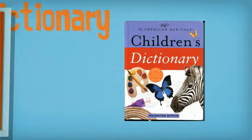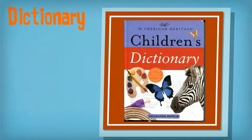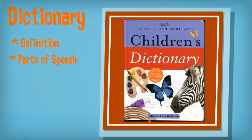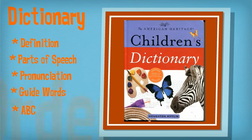The first one we're going to talk about is the Dictionary. The main point of the Dictionary is to find a definition or the meaning of a word. It also tells you the parts of speech, pronunciation, or how to pronounce the words. They have guide words and they're in alphabetical order.